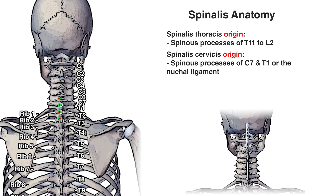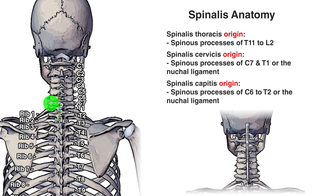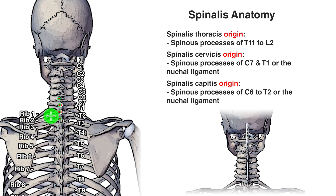Our last origin points are for the spinalis capitis, marked in red with green outlines. It originates on the spinous processes of C6, C7, T1, and T2. Bear in mind that in addition to connecting to the spinous processes, it can also originate from the nuchal ligament as well.